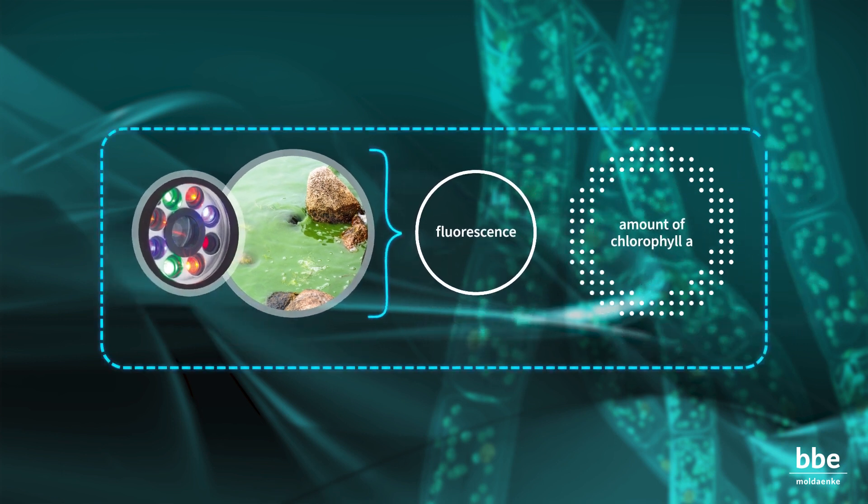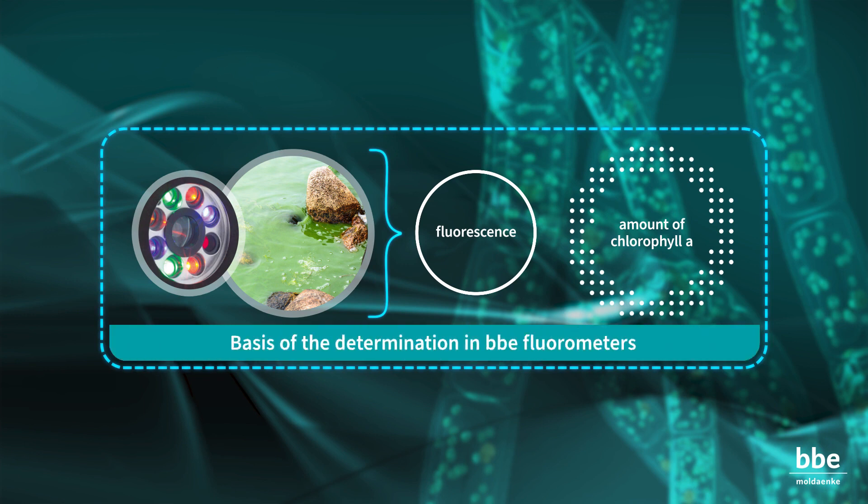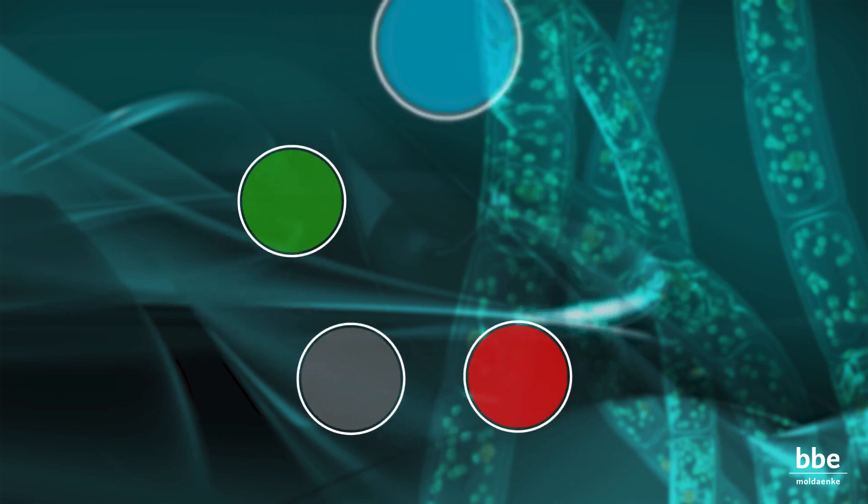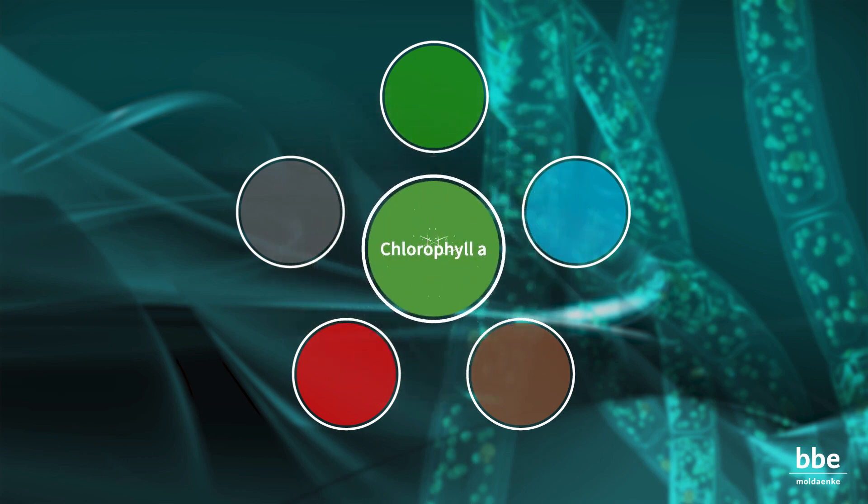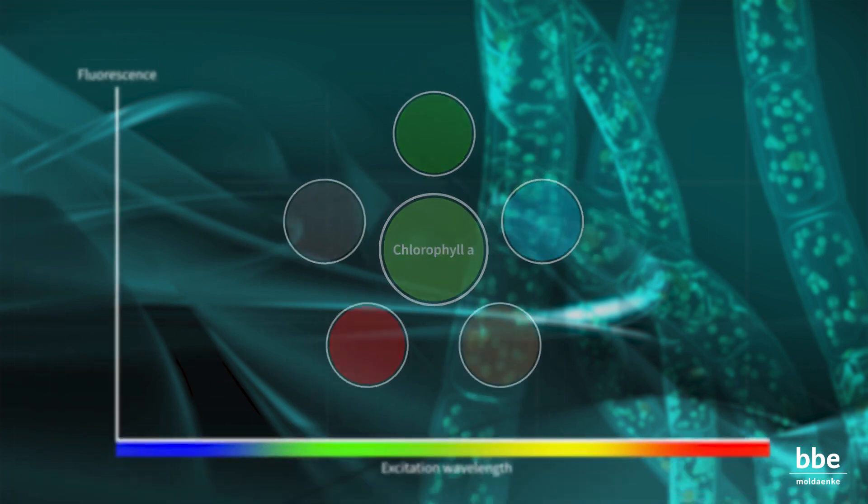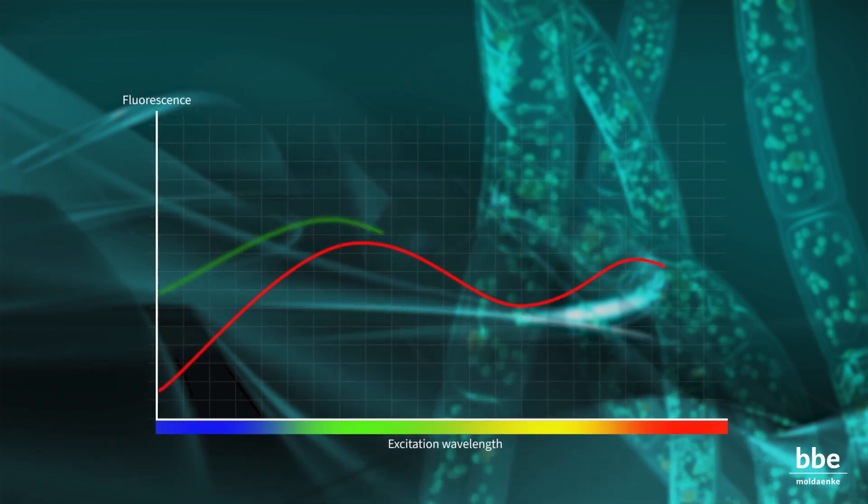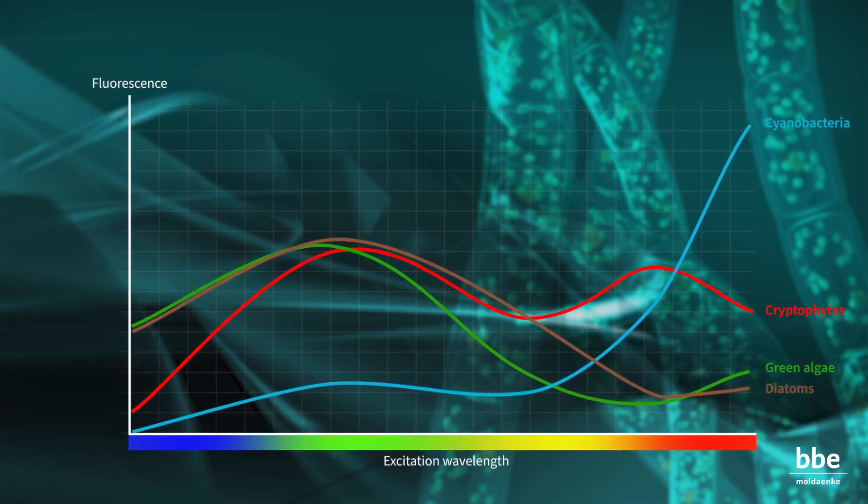This method is the basis of the determination in the BBE fluorometers. Five main spectral classes can be identified, which are related to the different algae pigments. These pigments cooperate with chlorophyll A to transfer the energy of the trapped light. Each class has a characteristic pattern of fluorescence at defined excitation wavelengths.